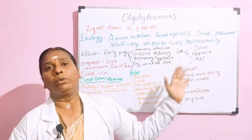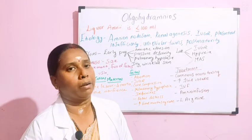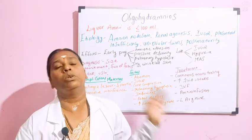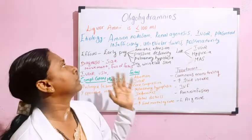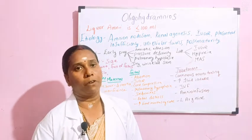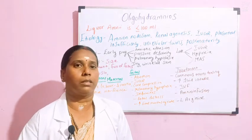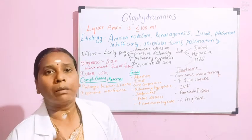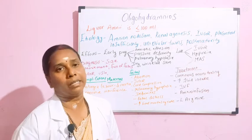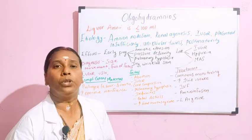Then comes intrauterine growth retardation. Oligohydramnios can lead to intrauterine growth retardation, or intrauterine growth retardation can also lead to oligohydramnios. And then placental insufficiency — whatever the cause, whether decreased placental perfusion or inadequate nutrition for the mother — it decreases amniotic secretions, leading to placental insufficiency.